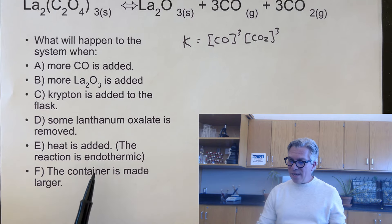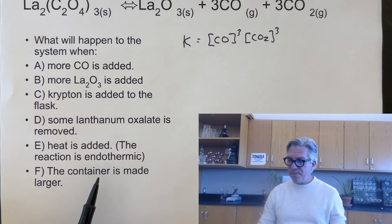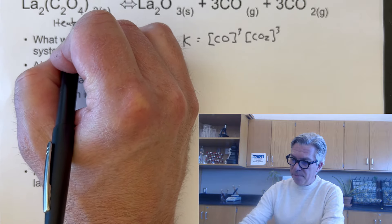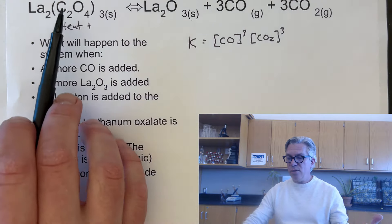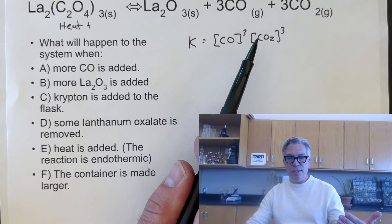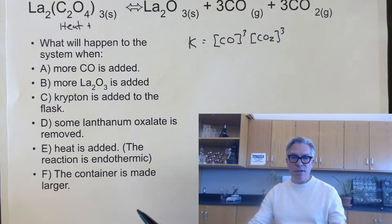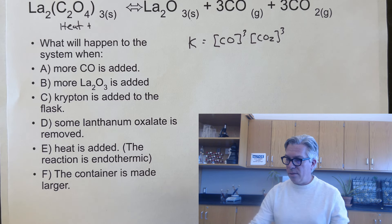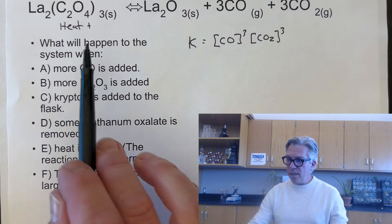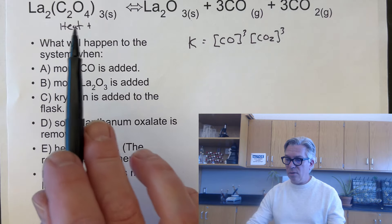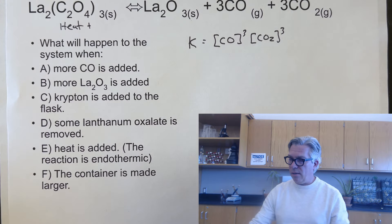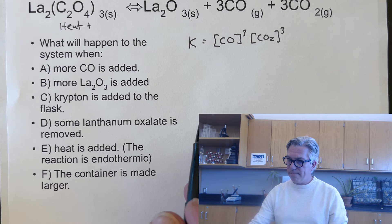If this reaction is endothermic and heat is added, heat is on the reactant side. Adding heat will cause the equilibrium to use up some of that heat and make more products, shifting to the right. If the container is made larger, the system will try to make more molecules to fill up that space, so the reaction shifts toward the product side.